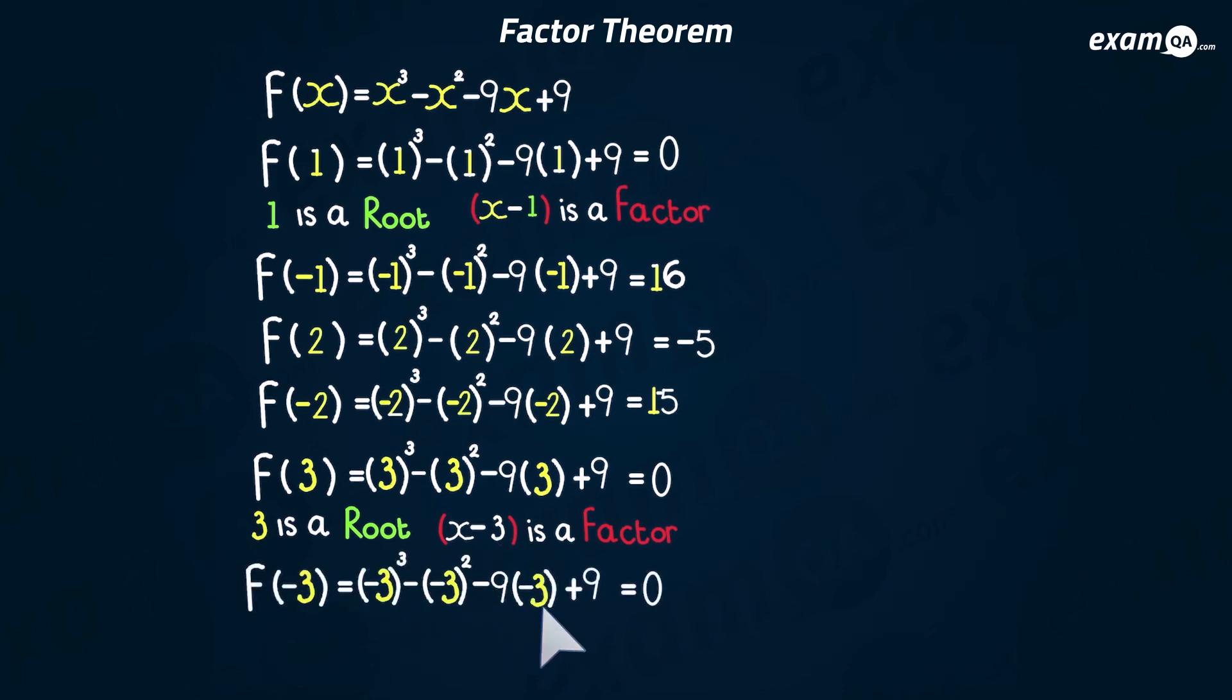And minus 3 also gave us 0, which means minus 3 is a root. And x plus 3 is a factor. So we found all the factors of this cubic function. So you could rewrite this cubic function as a triple bracket, if you'd like.